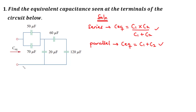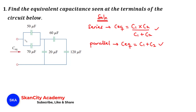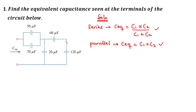Looking through the terminals, you realize that two capacitors are connected in parallel because they are connected at the same two nodes. Also, 60 microfarads and 120 microfarads are connected end to end, which means they are connected in series. Let's resolve these two combinations.